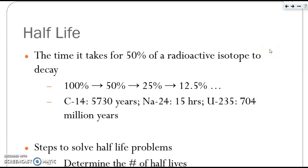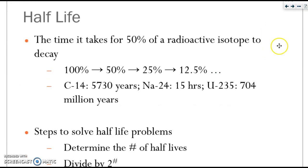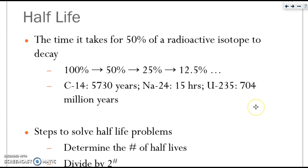Let's discuss half-life and how to solve problems for it. Half-life is the time it takes for 50% of a radioactive isotope to decay — so it goes from 100% to 50% to 25%, and so on. The half-life of each radioactive substance varies greatly: carbon-14 is 5,730 years, sodium-24 is 15 hours, and uranium is over 700 million years. There are many ways to solve half-life problems, which we will discuss in our next video.